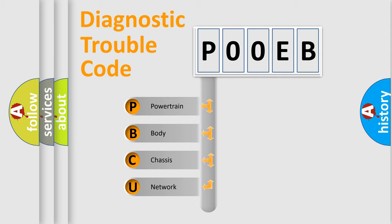We divide the electric system of automobile into four basic units: Powertrain, Body, Chassis, and Network.